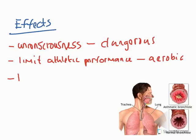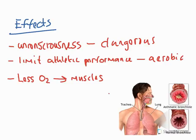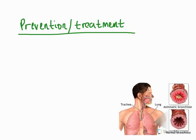Asthma can limit athletic performance especially in aerobic or endurance activities. The main reason is that we're ultimately delivering less oxygen to muscles. We therefore have a reduced tidal volume, less efficient gaseous exchange both externally at the lung and internally at the muscle, and we have to work anaerobically, producing greater levels of lactic acid. This leads to OBLA, which means we have to reduce the intensity of exercise or rest.